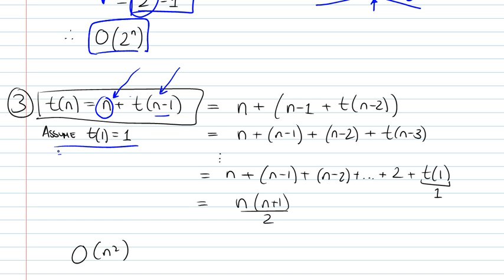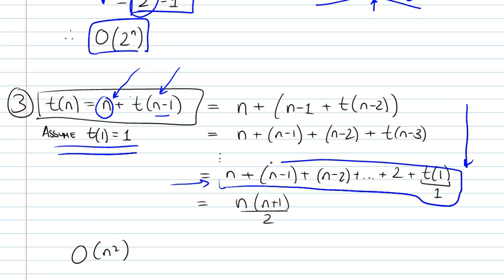We're going to assume that t(1), the base case, is just 1. It's a constant step. So if you're taking this recurrence relationship and expanding it, you end up with something like this. And all of these numbers can be added up to this expression.